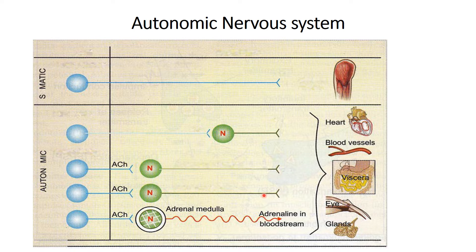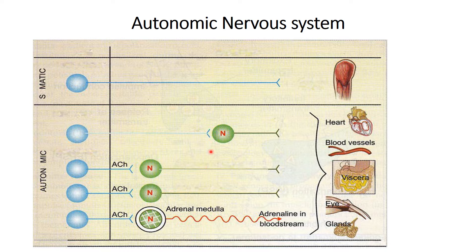A key difference between sympathetic and parasympathetic systems concerns their neurotransmitters. The post-ganglionic fibers of the sympathetic nervous system use noradrenaline or adrenaline as neurotransmitter. However, irrespective of sympathetic or parasympathetic, the pre-ganglionic fibers of both systems use acetylcholine as their neurotransmitter. The post-ganglionic fibers of the parasympathetic system also use acetylcholine — that is why it is named cholinergic.